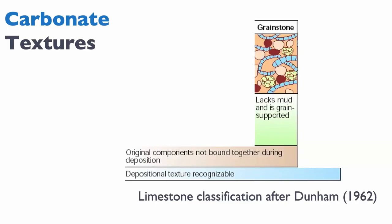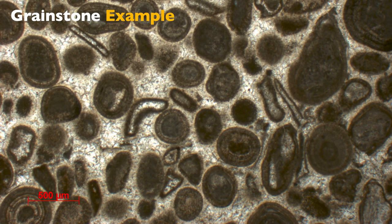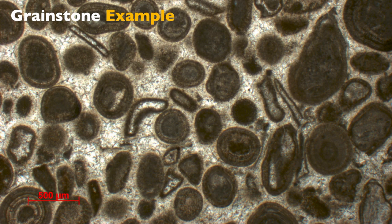If you don't have any mud, and the original components are not bound together during deposition, then you have a grainstone. In this example, the grains are touching, and in between the grains we have a cement — not micrite — indicating that this was pore space before it was filled by cement. Those grains form a grainstone.